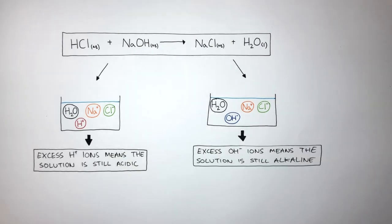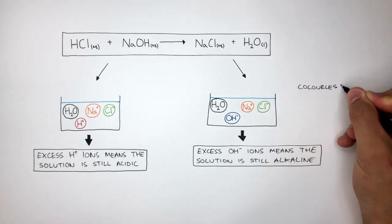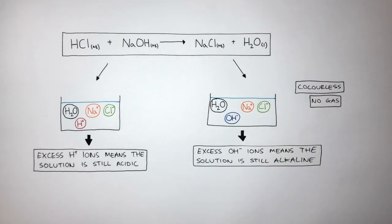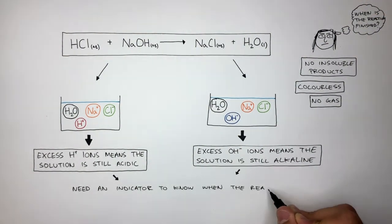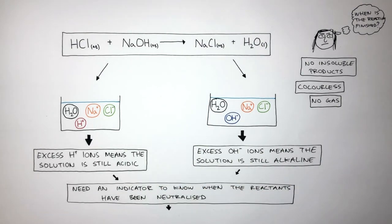Because the reactants and products are colorless, no gas is formed, and the products are insoluble, this makes it difficult for the person carrying out the experiment to know when the reaction is finished. Therefore, we need an indicator to know when the reactants have been neutralized, and the reaction will be finished when the pH is 7. This information will be given to us by using an indicator.